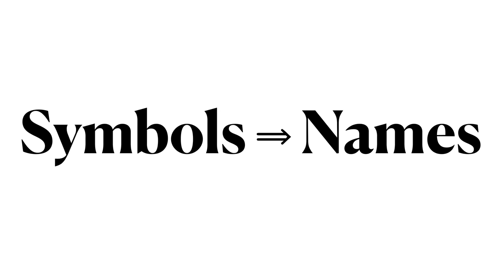This gets us halfway through the token theory of the origin of writing. Next we will examine how, using these symbols, we got to the point where names could be written outside of an accounting system.